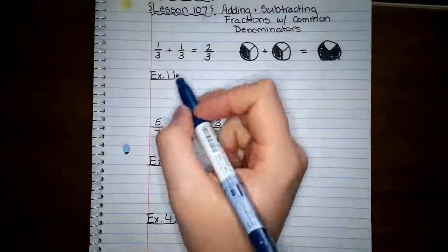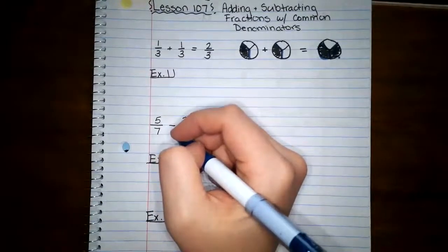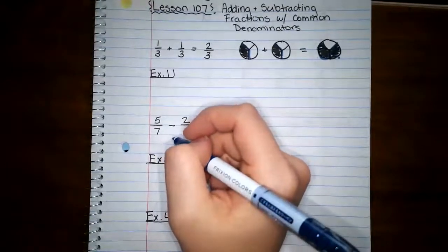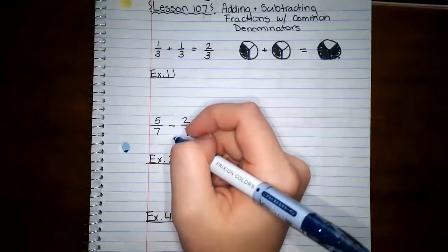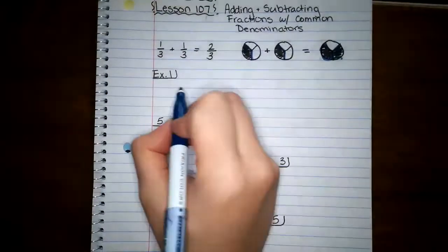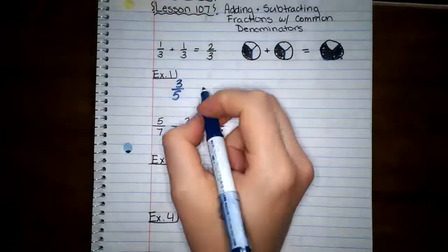Okay, let's go to example number one. It says that Blake is going to mix three fifths of a pound of cashews with one fifth of a pound of pecans. What is the weight in pounds of cashews and the pecan mixture? So we're only going to add the top numbers. They gave us two fractions. They gave us three fifths and they also gave us one fifth.